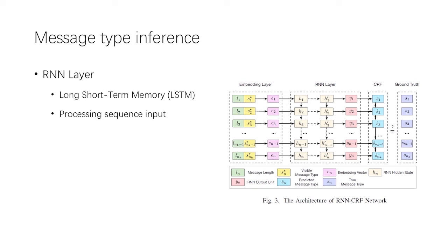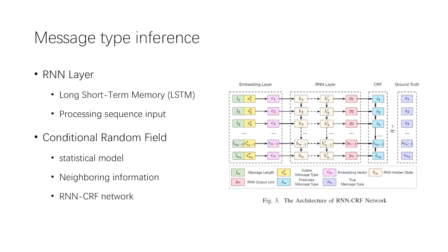The LSTM can integrate information of all elements in sequence order, which determines its suitability for processing sequence input. The conditional random field is a statistical model that considers neighboring information to make structured predictions. We connect a CRF network after the RNN layer to form an RNN-CRF network, which combines features of past inputs and neighborhood tag information at sentence level.